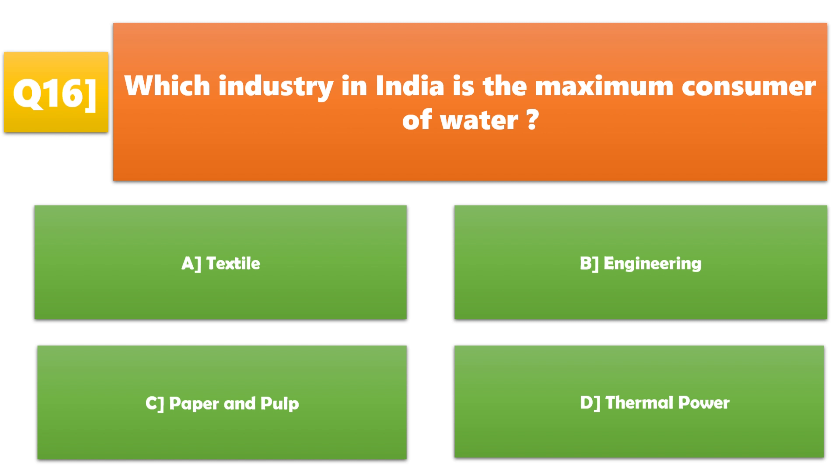Which industry in India is the maximum consumer of water? A. Textile, B. Engineering, C. Paper and pulp, D. Thermal power. D. Thermal power is the correct answer.